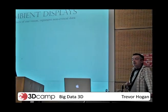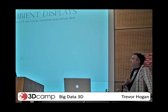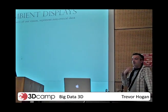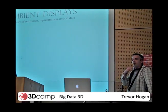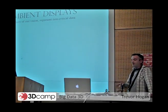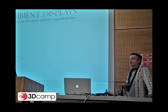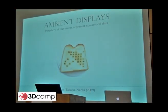Ambient displays are displays or data visualizations that are on the periphery of our vision. They're not the focus of our attention and they represent non-critical data.